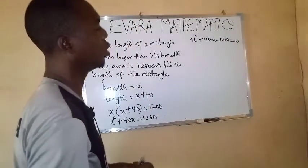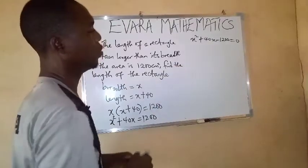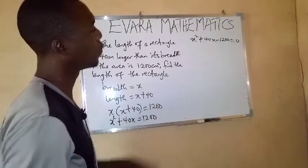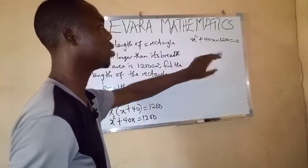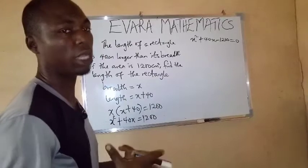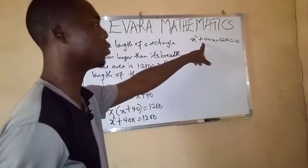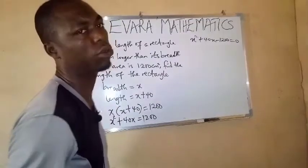So what we need to do here is to factorize. We will look for two factors of negative 1,200 whose sum is 40. Now these two numbers that you will add together, you will get plus 40, and you multiply them, you get minus 1,200.